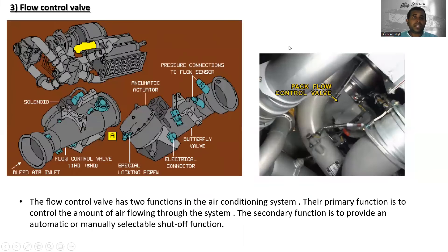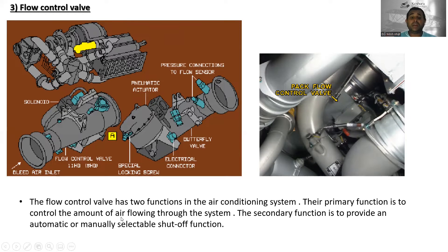Third is the flow control valve. Here you can see the flow control valve with its pneumatic actuator, pressure connections to flow sensors, butterfly valve, electrical connector, special locking screw, BDHA connection, and solenoid. The flow control valve has two functions: the primary function is to control the amount of air flowing through the system, and the secondary function is to provide an automatic or manual selectable shutoff function.